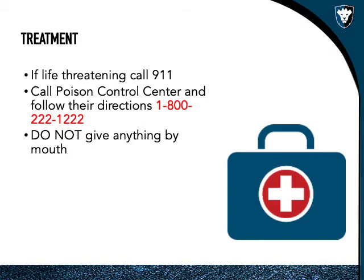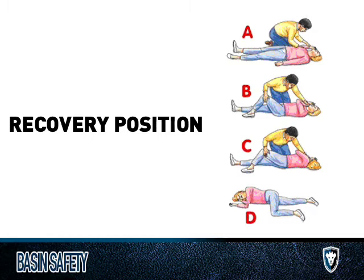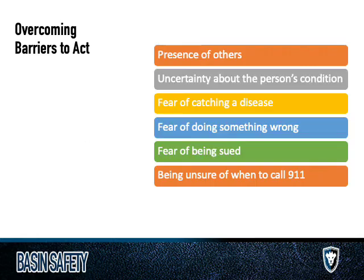If someone becomes unconscious, place them in the recovery position. Take their hand, place it under their chin, lift the leg on the same side, and flip them over so one hand is under their head and that same-side leg is across the body. This keeps airways open, prevents choking on mucus or vomit, and prepares them for medical transport. If you're alone and must call 9-1-1 first, get them into a safe position before making the call.